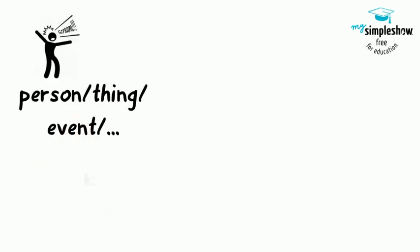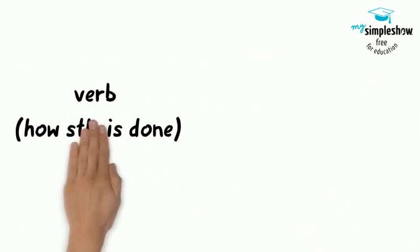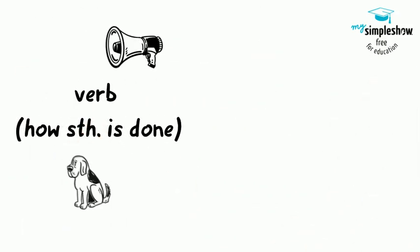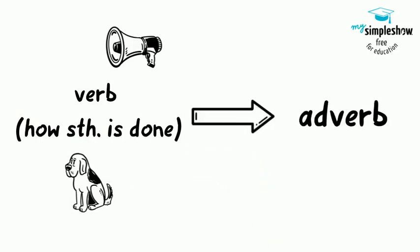And that's about it. That's the whole explanation. When I describe a person, an animal, a thing, and so on, I use an adjective. When I describe a verb or how something is done, I use an adverb.